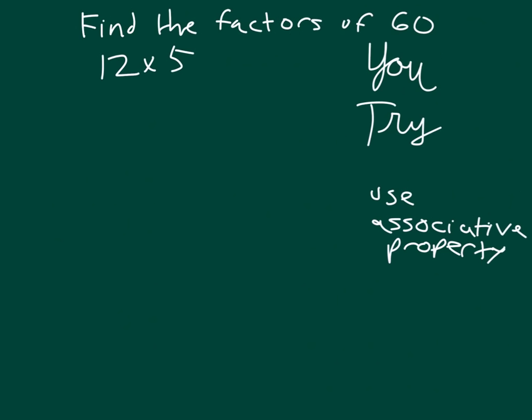And then, so there's different ways we can figure out these factors. Okay, it's your turn to try. It says, find the factors of 60, use the associative property. I did start you off with 12 times 5 equaling 60, so I gave you 2 of your answers. List the factors. Pause the video while you do your work.